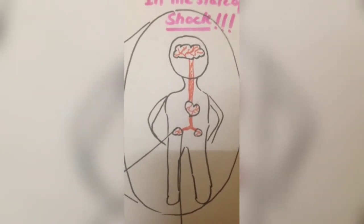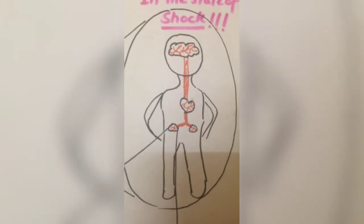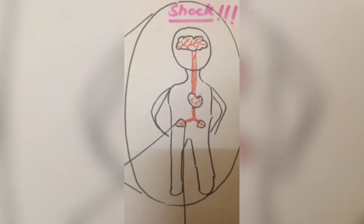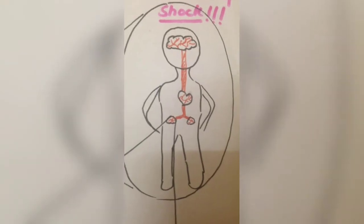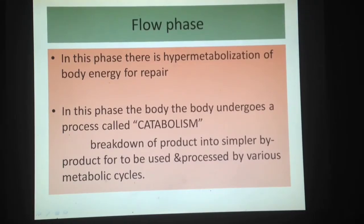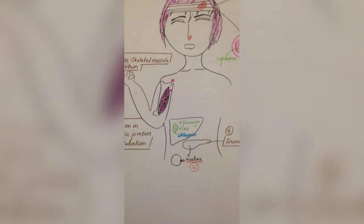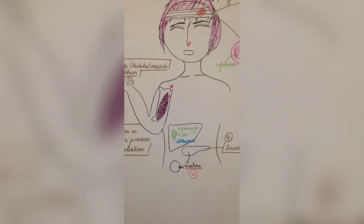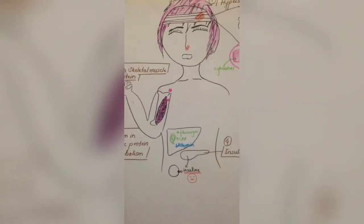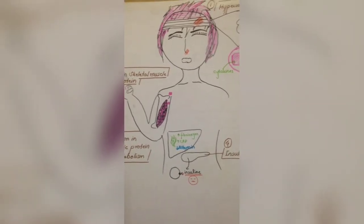The patient will be in this ebb phase state for about 24 to 48 hours, and this time can be shortened if the patient is resuscitated. In the flow phase, there is hyper-metabolization of body energy for repair. The body undergoes catabolism, which is the breakdown of products into simpler byproducts to be used and processed by various metabolic cycles.